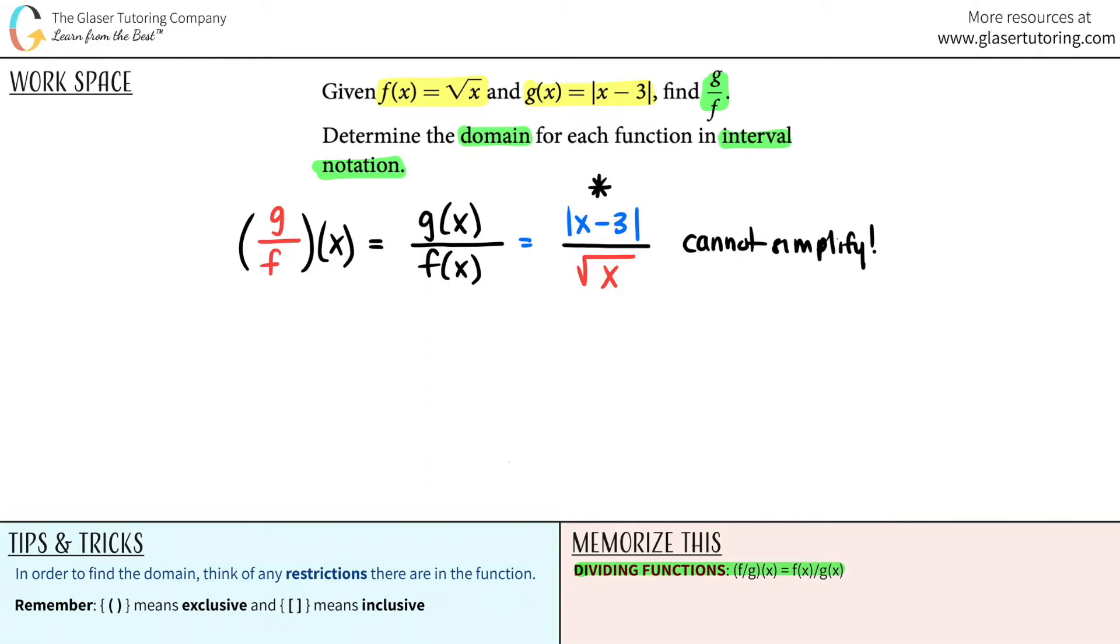So that's our answer. If you wanted to say it in this notation or this notation, it's the same exact thing. So g of x divided by f of x is just the absolute value x minus 3 over the square root of x. And that's the first part. Now we just have to look at this function and determine the domain. It's as simple as that.